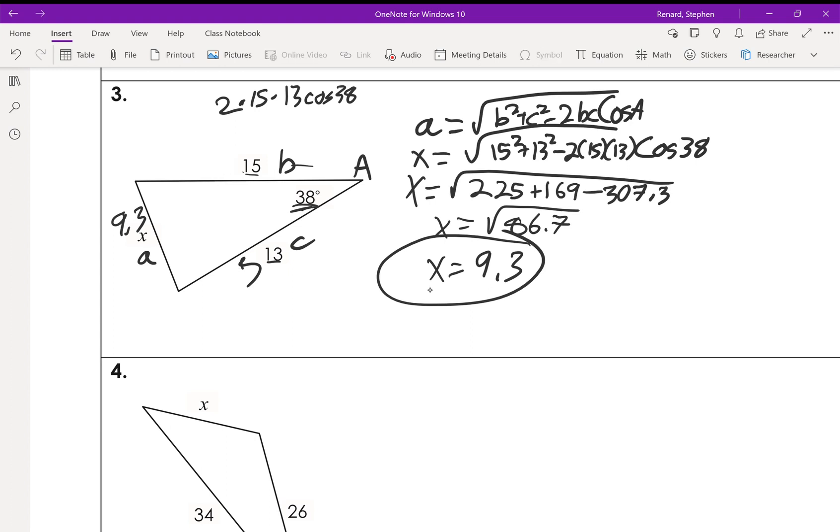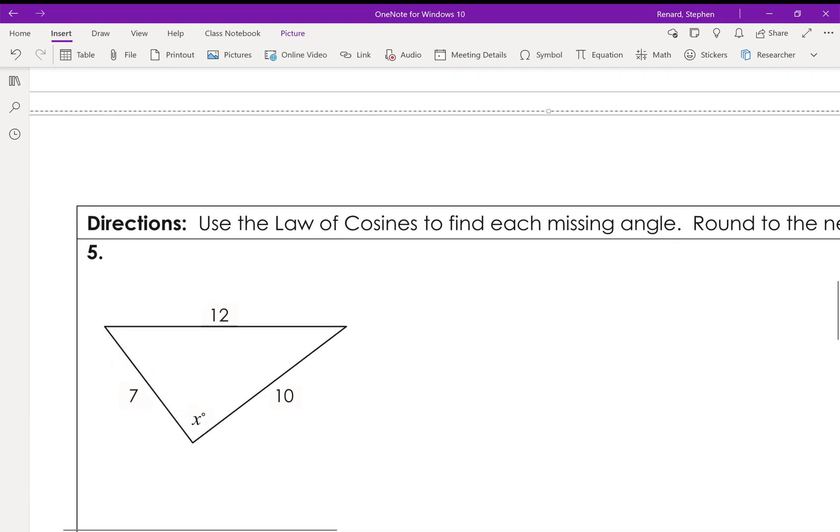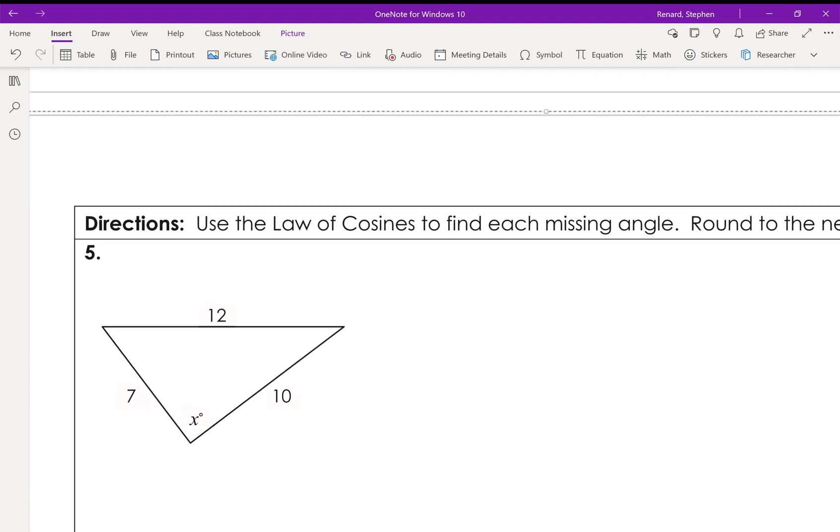To solve for missing side, we can then use either the law of cosines or the law of sines to solve for the missing angles and we're good to go. So when we're talking about missing angles, all we have to do is kind of rearrange the formula a little bit and we have things like angle A equals the inverse cosine.